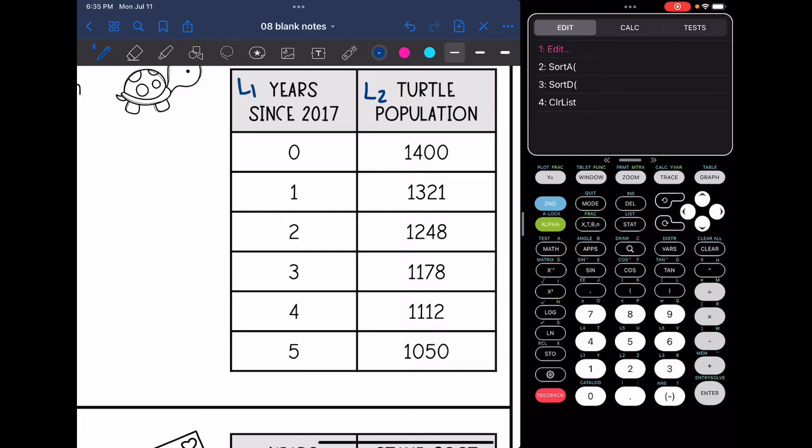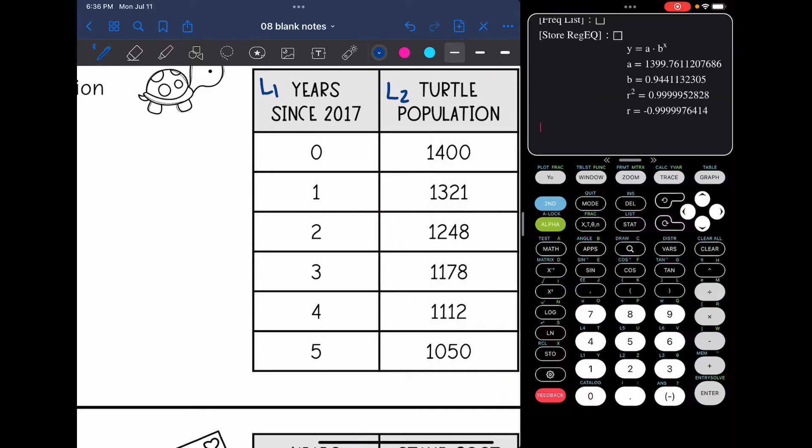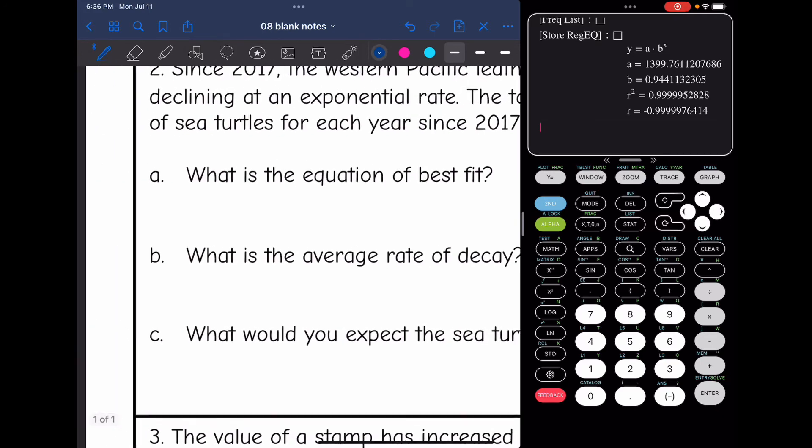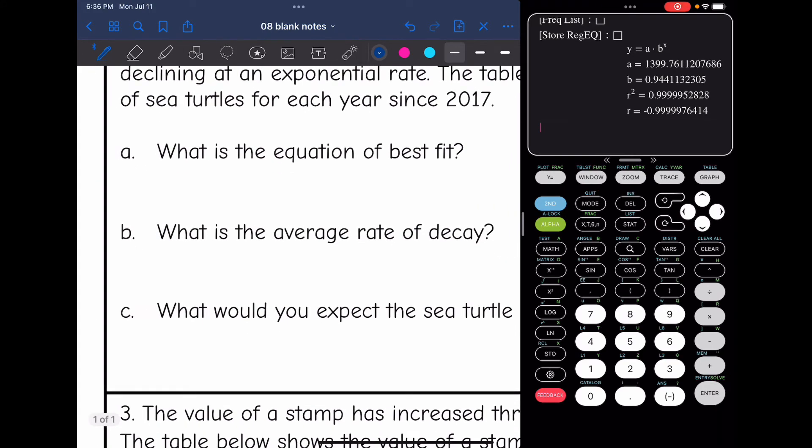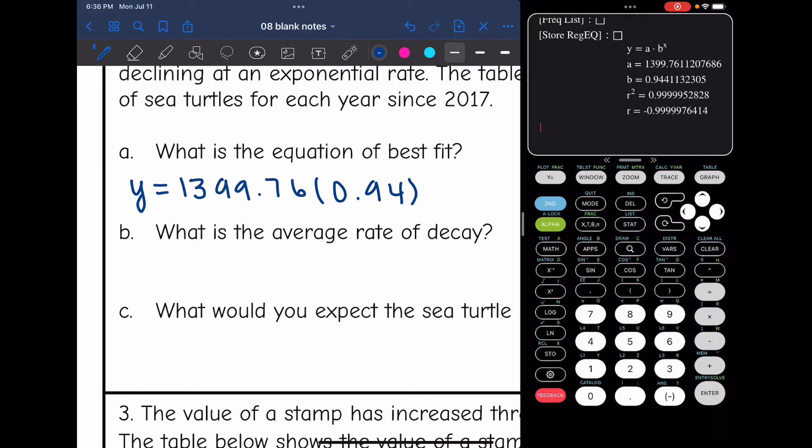Okay, now I want the exponential regression. So I'm going to go to stat. I go over to calc and then I go down to 0 for exponential regression. Okay, so the A value is 1,399.76 and then the B value is 0.94. So my equation for the equation of best fit would be Y equals 1,399.76 times 0.94 to the X.